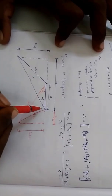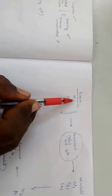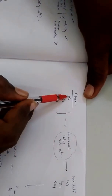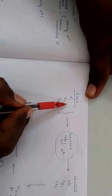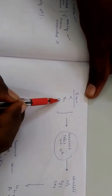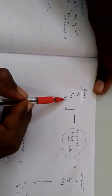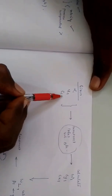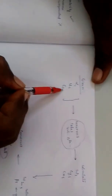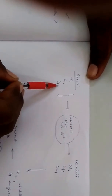To draw the inlet velocity triangle, three physical parameters related to the turbine will be provided: alpha1, which is the nozzle angle; U1, which is the blade velocity; and C1, which is the inlet velocity of the steam or fluid striking the blades of the turbine. Based on these three parameters, we can construct the inlet velocity triangle for the first stage of the turbine.